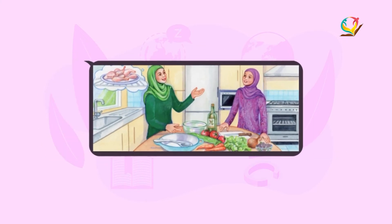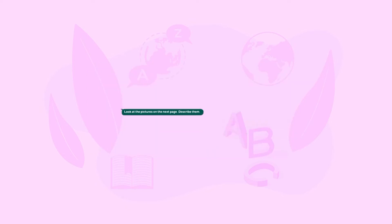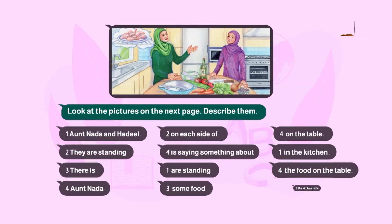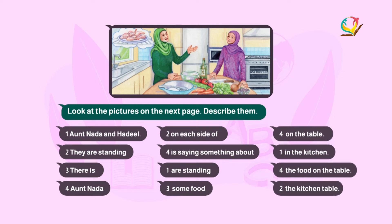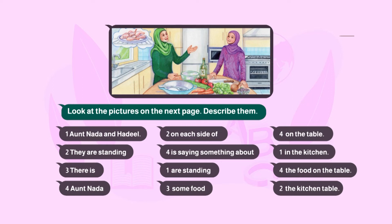دعونا ننتقل إلى exercise number two. المطلوب: look at the picture on the next page and describe it. عندي صورة أصفها: two women are standing in the kitchen, they are talking about something. عندي أربع جمل تساعدني أعمل description. number one: Aren't Nada and Hadil standing in the kitchen? — نعم، نادا وهدي واقفين في المطبخ.